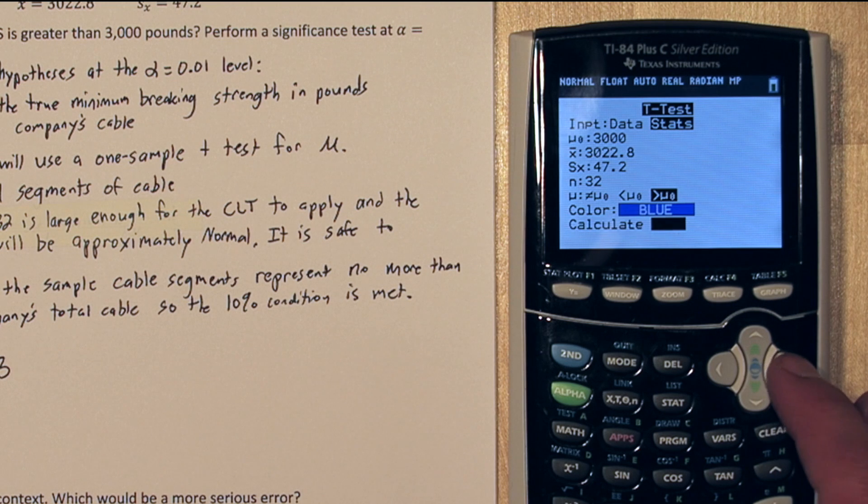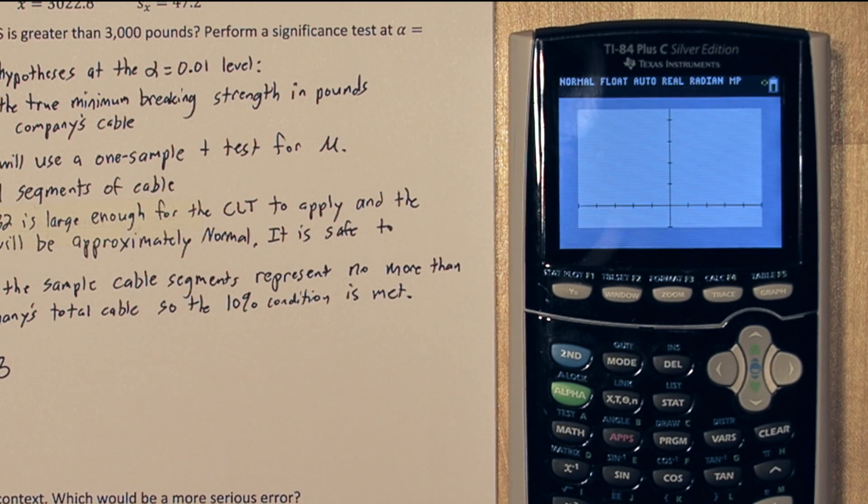When we go down to draw, it draws a t-distribution with 31 degrees freedom. It also marks the critical value of approximately 2.733 and gives us our p-value, which in this case is .0051.